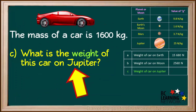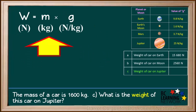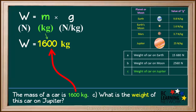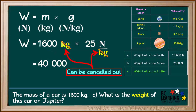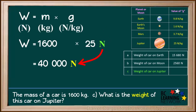Question C asks us for the weight this car would have on the planet Jupiter. Starting with the formula w equals m times g, we substitute 1,600 kilograms for the mass and 25 newtons per kilogram for the value of g on Jupiter. 1,600 times 25 comes out to 40,000. The unit kilogram can be cancelled out, leaving only newtons. The weight of the car on Jupiter is 40,000 newtons.